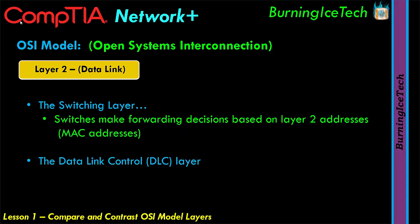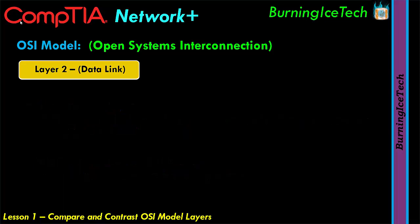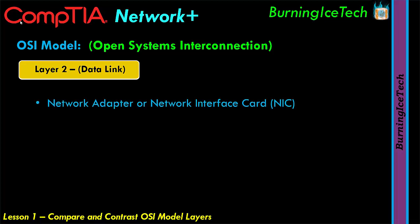The data link layer is also often called the DLC layer, short for Data Link Control layer, because there will sometimes be protocols on this layer that run as DLC protocols, including MAC addresses. Devices that operate at layer two include network interface cards (NICs), bridges, switches, and wireless access points (APs).